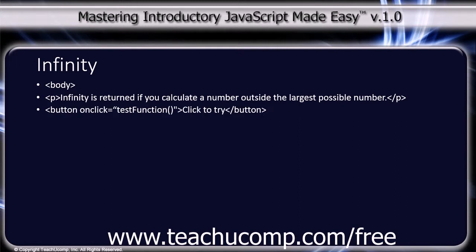Button tag. onClick equals "testFunction()". The button text reads "Click to try." Close button tag. Paragraph tag with an ID of "test". Close paragraph tag. Close body tag.